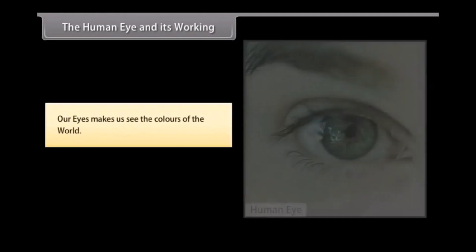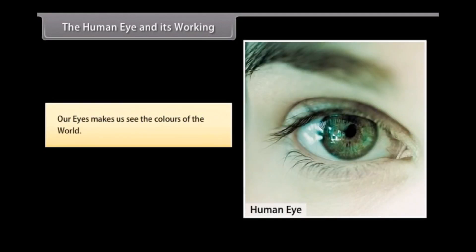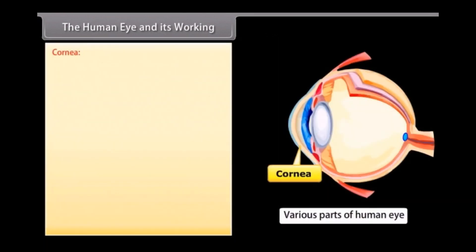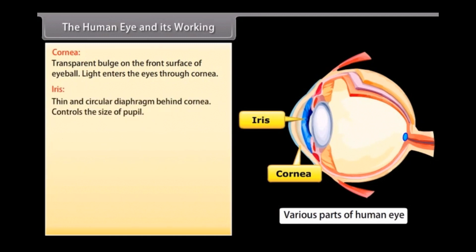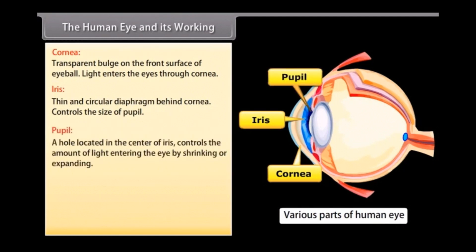The human eye has a crystalline lens and works like a camera. Various parts of the eye along with their functions are: cornea — the transparent bulge on the front surface of the eyeball through which light enters; and iris — a thin circular diaphragm behind the cornea which controls the size of the pupil.